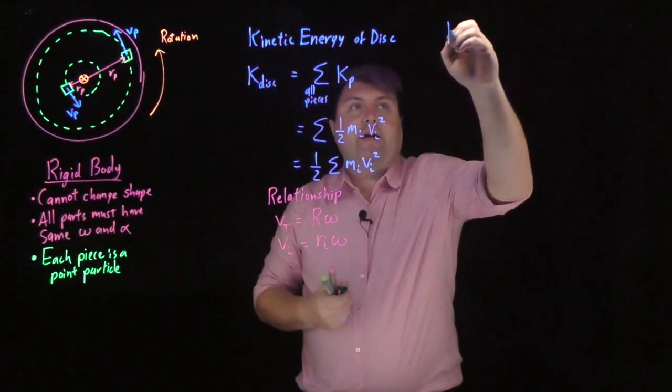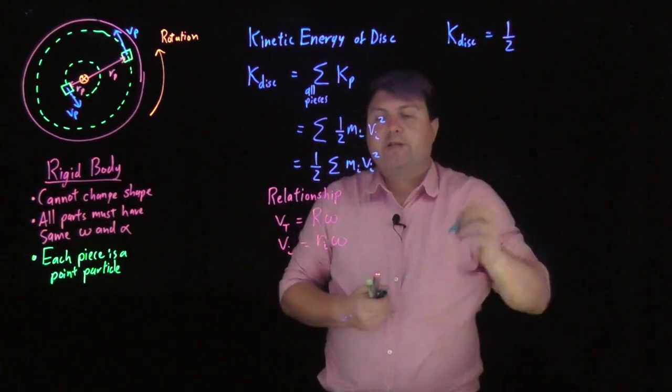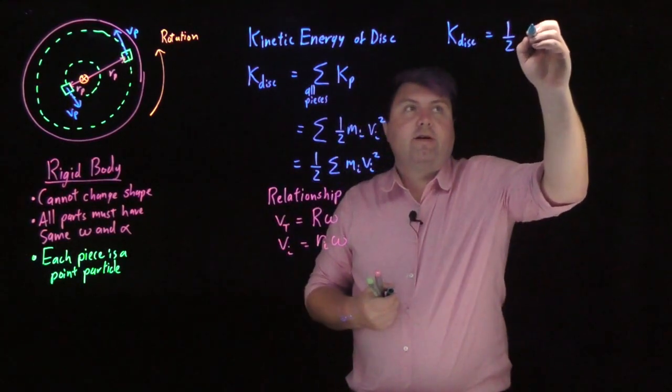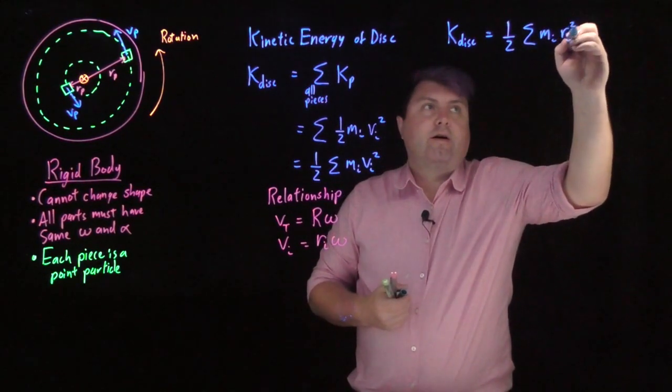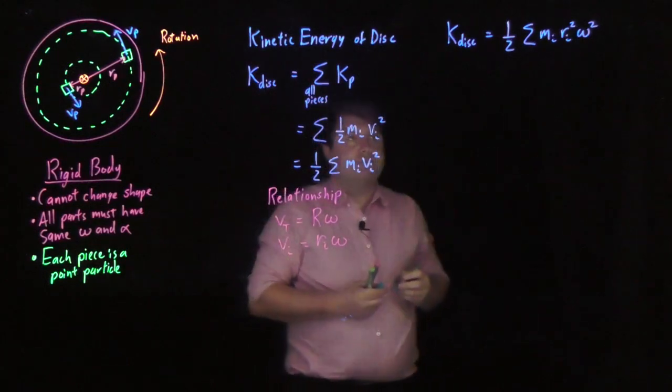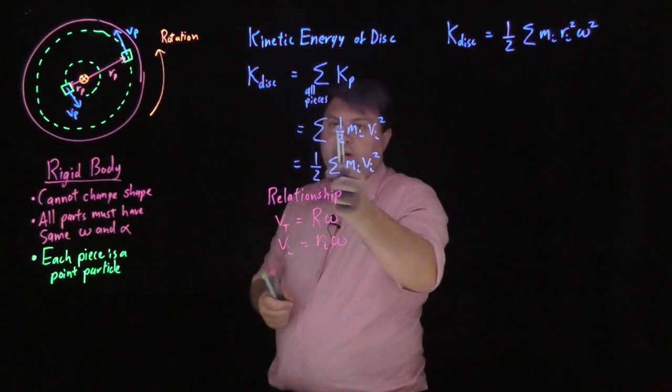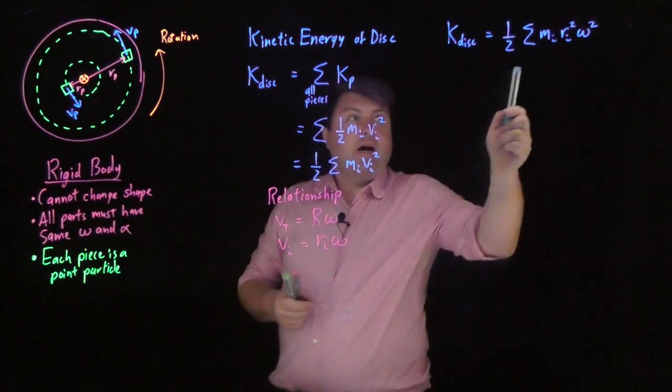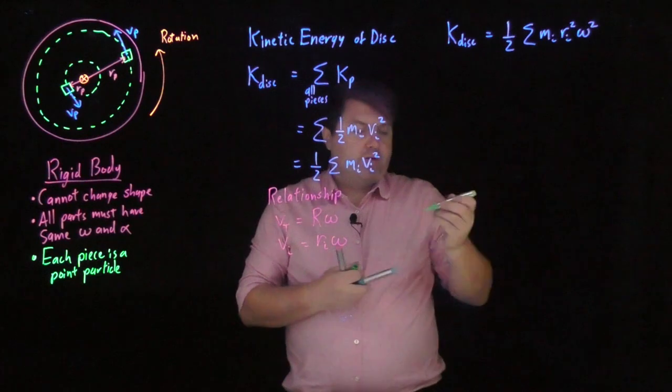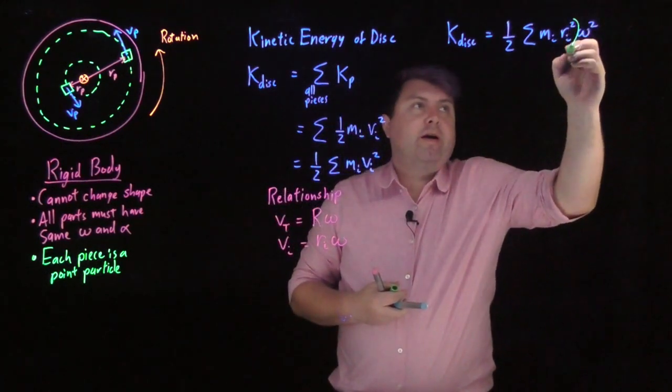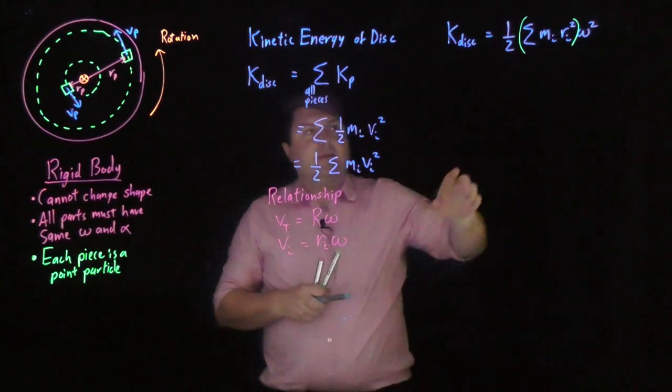So my kinetic energy of my disk, we still have this one-half out, and now I can do this sum of m_i r_i squared omega squared. Now, just as I pulled the half out because it was constant in this sum, this omega squared is also constant. So we can take this and bring it out in that way.